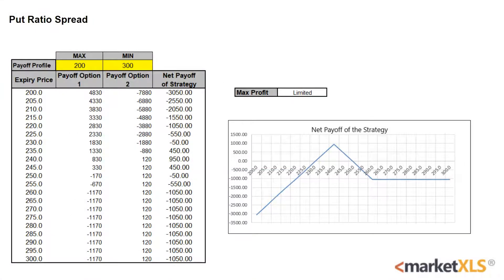A payoff schedule and a payoff diagram are also available in the template. They can be used to analyze the gain, the loss, and the breakeven. Maximum gain for the put ratio spread is limited and is made when the underlying stock price at expiration is at the strike price of the option sold, as shown by the green box. At this price, both the written puts expire worthless while the long put expires in the money.